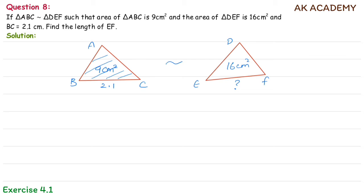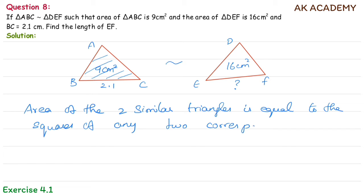The area of two similar triangles is equal to the ratio of the squares of any two corresponding sides.